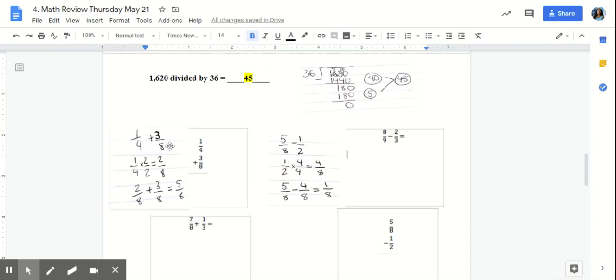We know that 4 and 8 are common factors. So we can multiply 1/4 by 2/2 and get 2/8. Now we're ready to add our fraction. 2/8 plus 3/8, and our answer is 5/8.